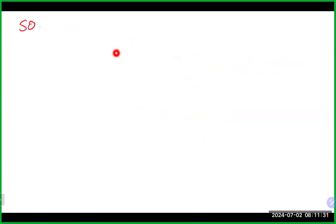Let's draw a couple more Lewis structures. Draw Lewis structures for NH4+, N2, and CO2, and see what you come up with. Let's take a look — one of the first things you want to do is figure out the total number of valence electrons.